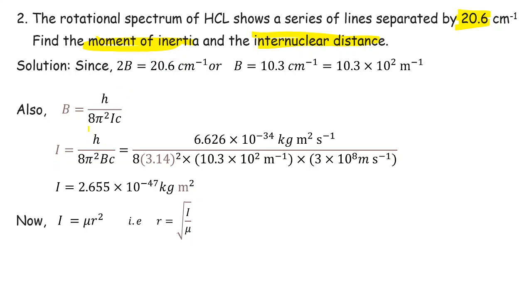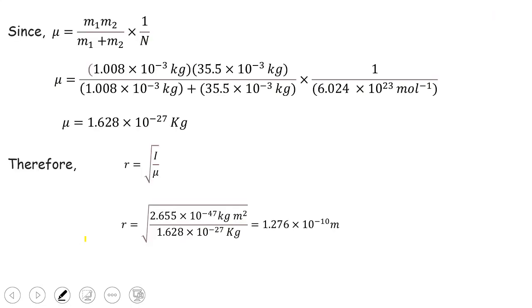We know B = h/(8π²Ic), so rearranging gives I = h/(8π²Bc). Substituting h = 6.626×10⁻³⁴ J·s, 8π² = 8×(3.14)², B = 10.3×10² m⁻¹, and c = 3×10⁸ m/s, we get I = 2.655×10⁻⁴⁷ kg·m². Now we need the internuclear distance r. From I = μr², we get r = √(I/μ).